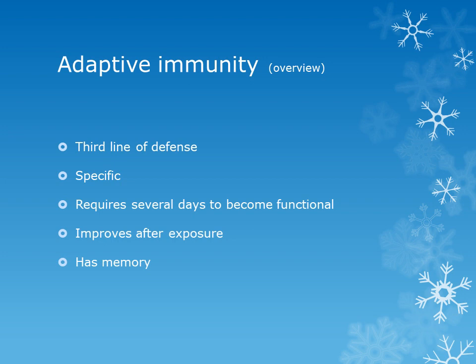You can see on your slides there are two more important differences: adaptive immunity improves after exposure and it has memory. Adaptive immunity gradually improves after repeated exposure to the same microorganism, and that improvement is due to memory cells — specifically memory B cells and memory T cells. Innate immunity does not improve after exposure and has no memory.